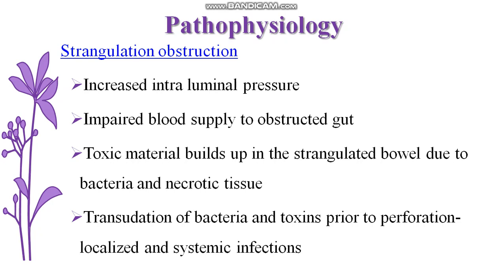We were discussing about the pathophysiology of strangulation obstruction. This is the pattern of strangulation - it may affect the blood supply and there is impaired blood supply to the obstructed gut. In the obstruction region, there is collection of toxic waste products like feces and gases, which leads to bacterial proliferation and build up of toxic materials.